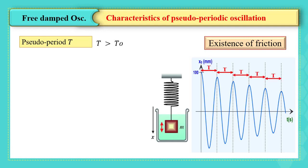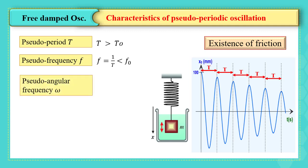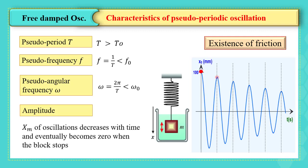Pseudo frequency F equals 1 over T, so it is less than the proper frequency F0. Pseudo angular frequency omega. The amplitude of oscillations decreases with time and eventually becomes zero when the block stops.